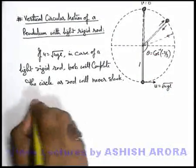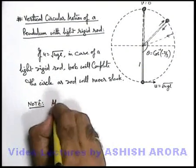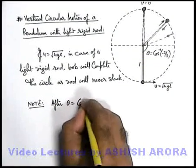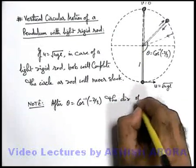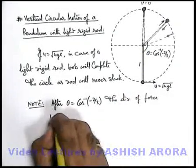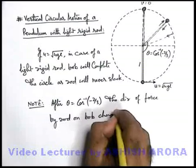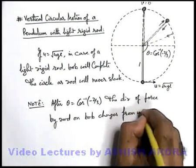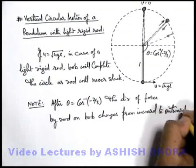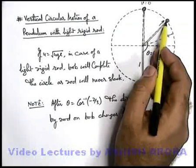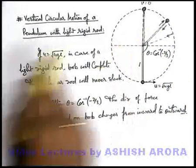And one more point which is important to understand, you can keep it as a note. After theta is equal to cos inverse of minus 2 by 3, the direction of force by rod on bob changes from inward to outward. As string can never apply outward force, as soon as tension becomes zero, the string becomes slack and it'll start following a projectile motion. But in case of a rigid rod, it'll never happen.